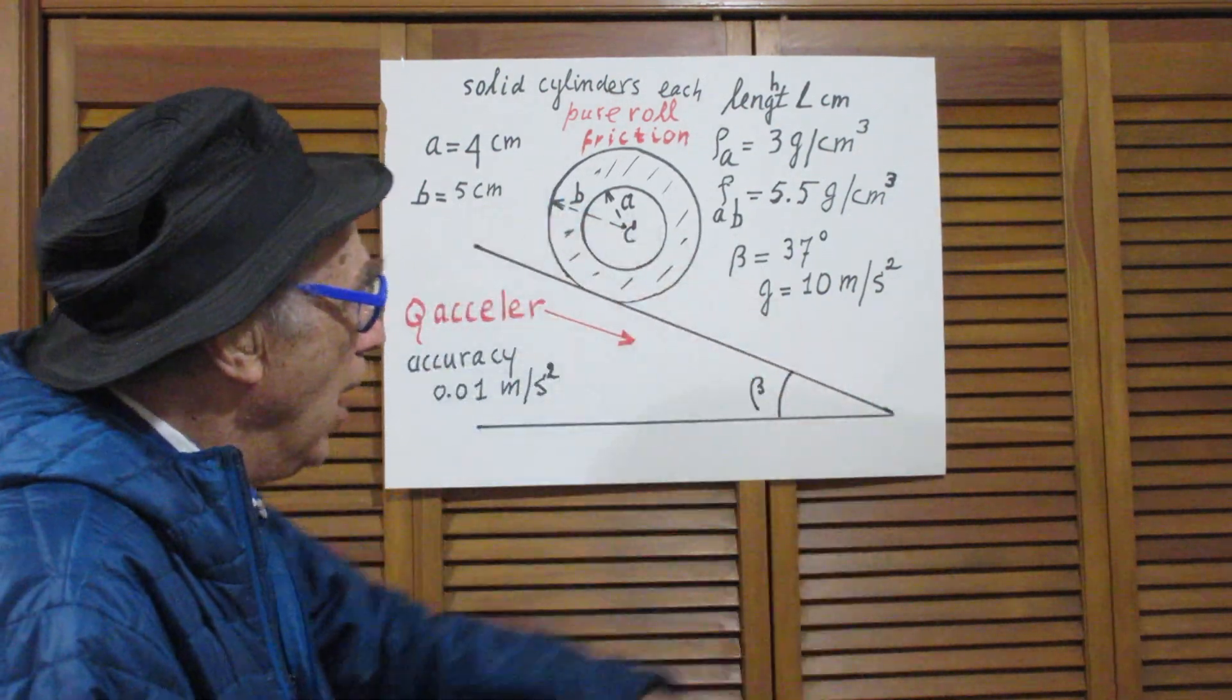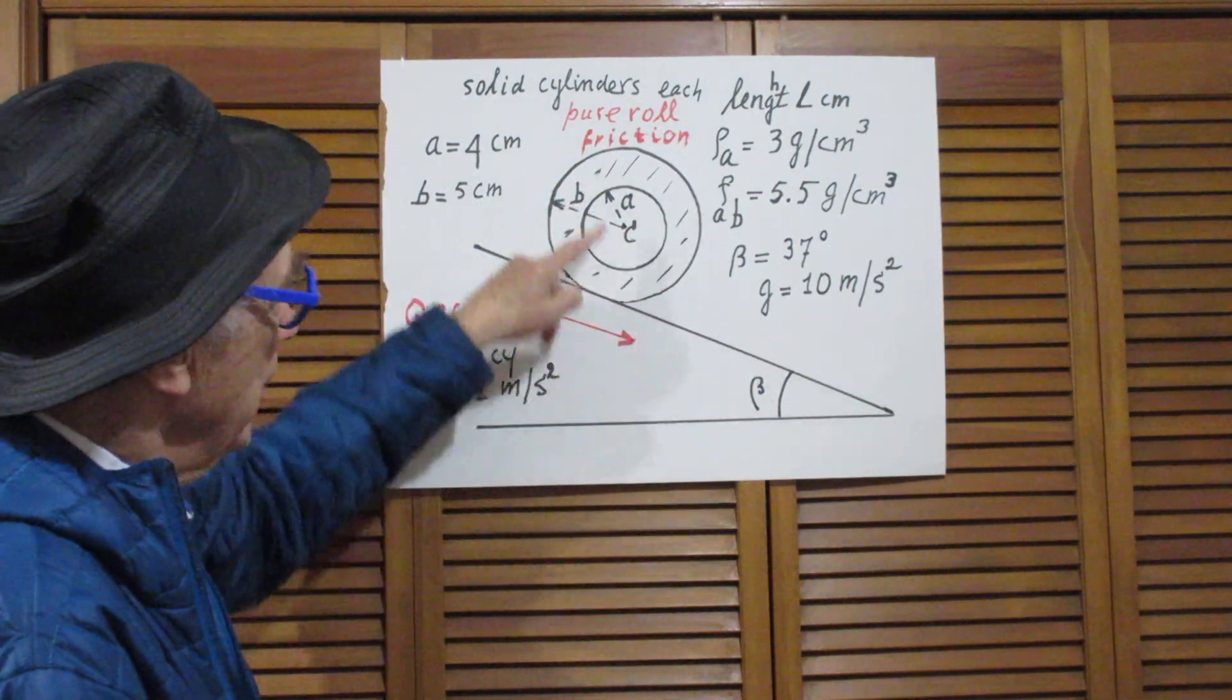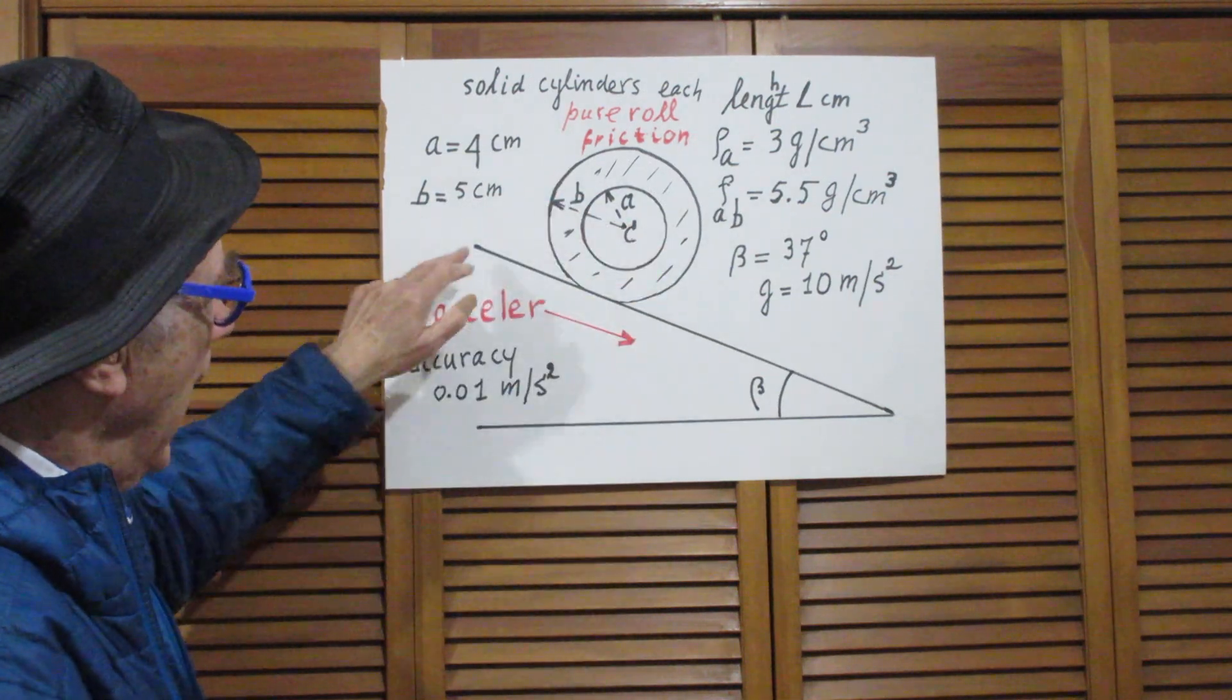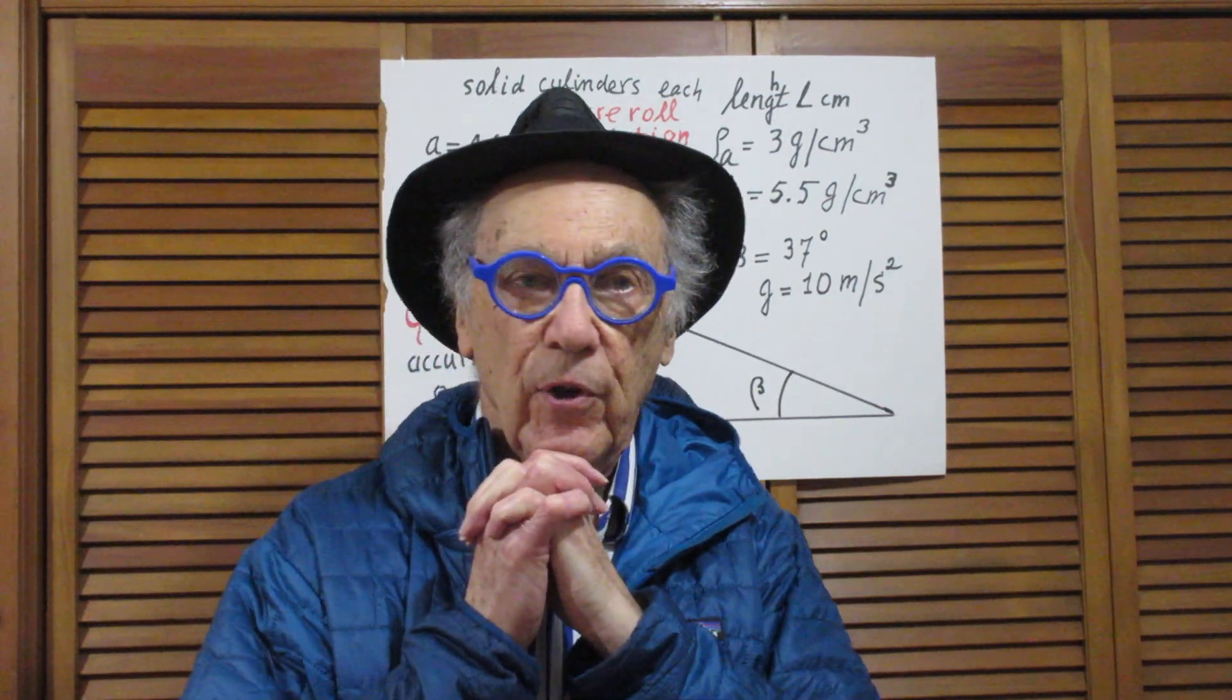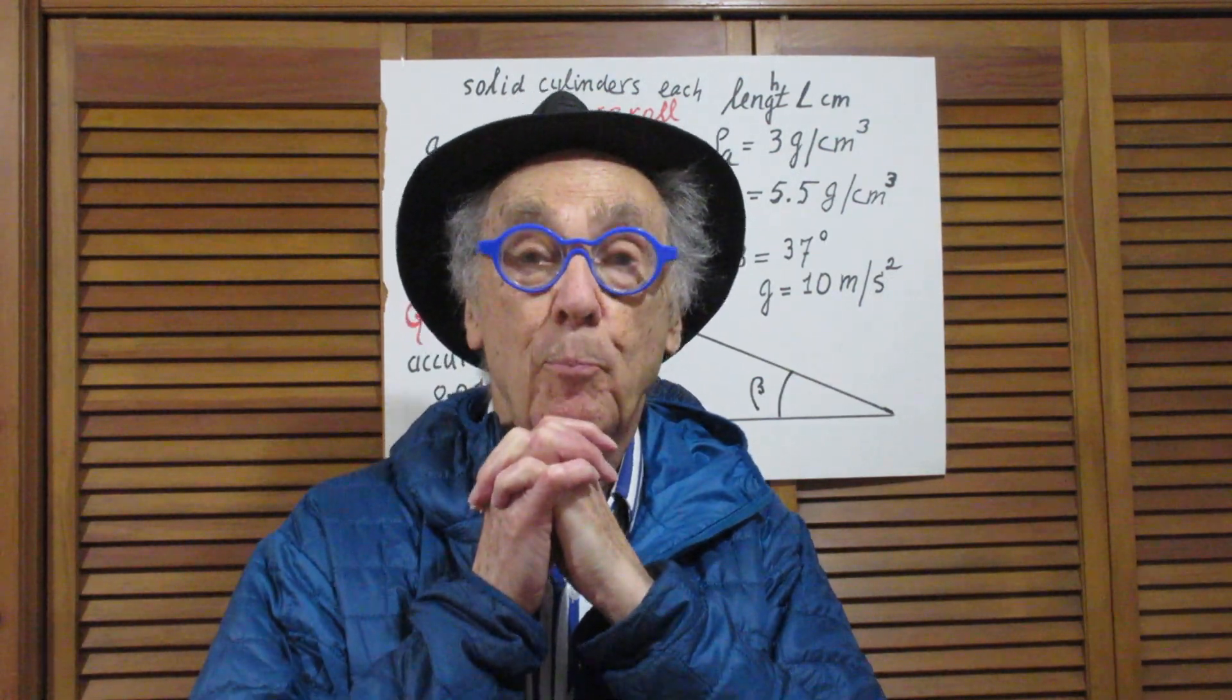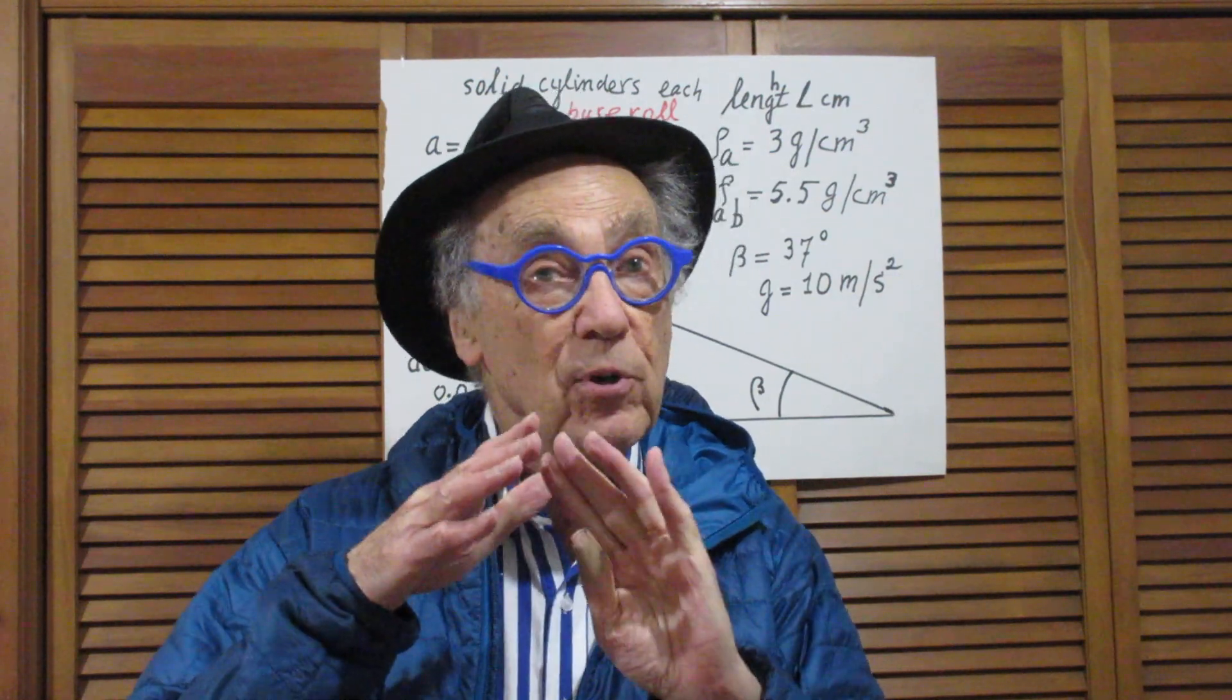And when they go down, there is sufficient friction between the outer rim here and the incline - there is sufficient friction that it will always go down in pure roll. Pure roll means there is absolutely no slipping.